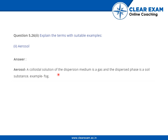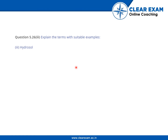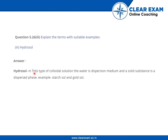The second part is aerosol. An aerosol is a colloidal solution in which the dispersion medium is a gas and the dispersed phase is a solid or liquid substance. An example is fog.